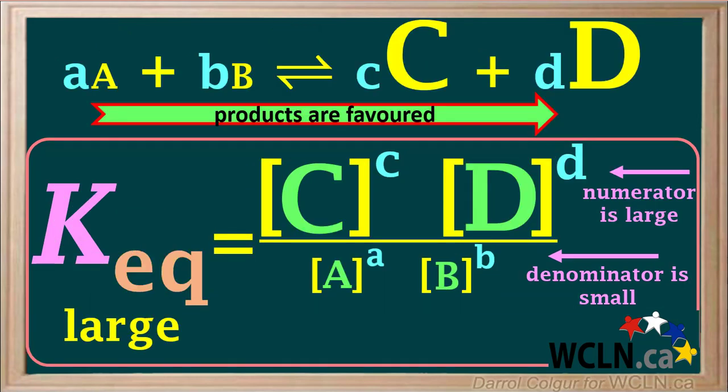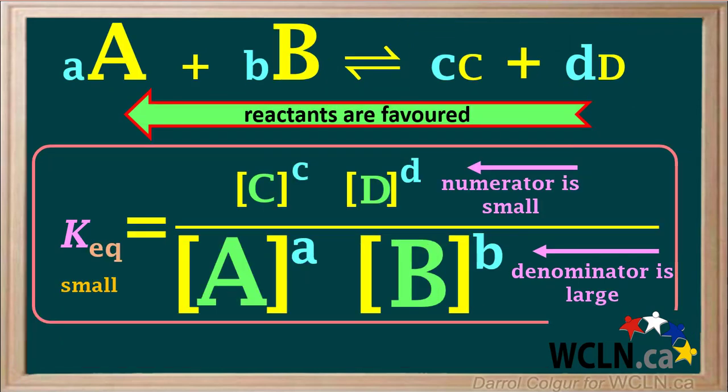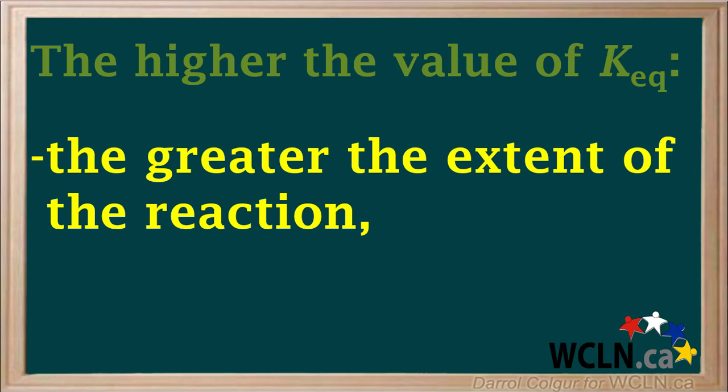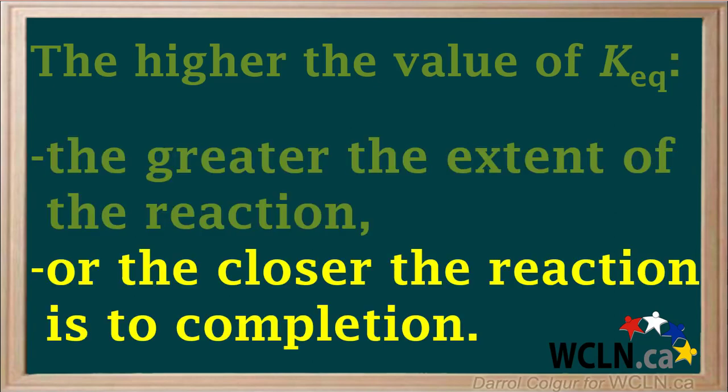In summary, if products are highly favored, the ratio of product concentrations to reactant concentrations is high, and the value of KEQ is large. But if reactants are favored, that ratio is low and KEQ is small. So the higher the value of KEQ for a particular reaction, the greater the extent of the reaction, or the closer the reaction is to completion.